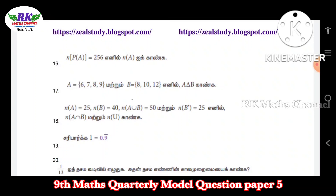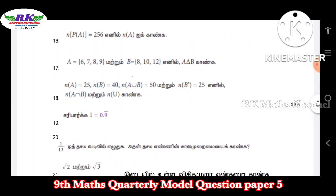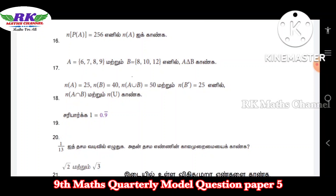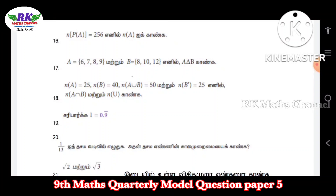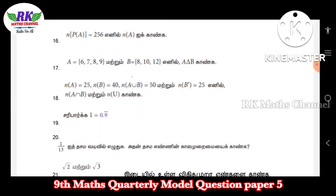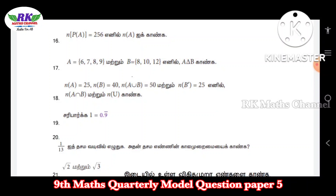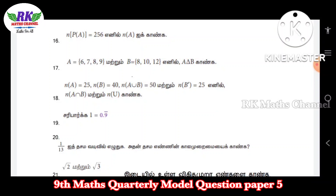Question number 17: we got set A and set B, and we find A delta B. Question number 18: we got n(A), n(A union B), and n(B'). You find n(A intersection B) and the value of n(A).